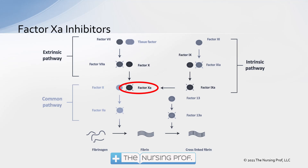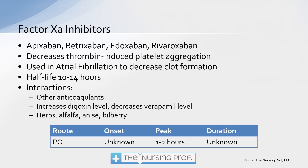We also have factor Xa inhibitors — medications that affect the common pathway in the coagulation cascade. There is quite a list of different factor Xa inhibitors used frequently. These decrease thrombin-induced platelet aggregation and are used in atrial fibrillation to decrease clot formation. They have a half-life of about 10 to 14 hours, with a peak of about one to two hours; onset and duration are not well established and they may remain in the blood for a longer period. Interactions include other anticoagulants, and these medications can decrease digoxin or verapamil levels. Use caution with herbs, especially alfalfa, anise, and bilberry.